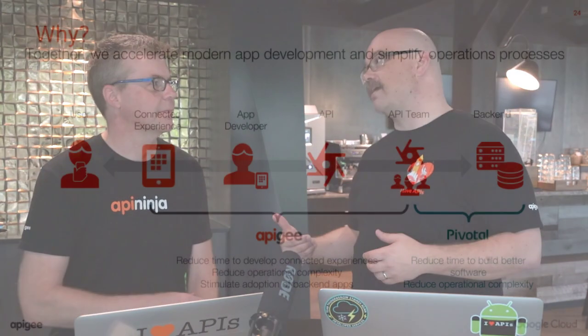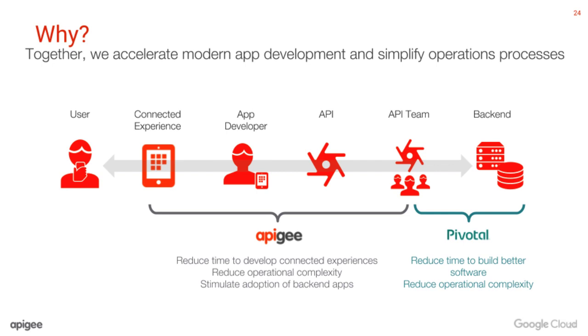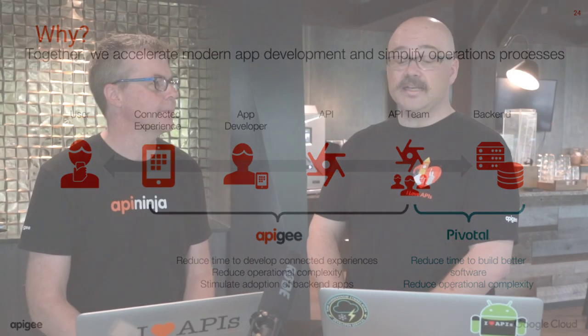Together, with Pivotal Cloud Foundry and Apigee, we can manage and accelerate modern app development — Pivotal managing the backend development and Apigee managing how consumers consume those services. We're using the right tool for the job: Pivotal is fantastic at hosting all those services, and Apigee is very well suited to managing the left side of your value chain where people access and consume these services.